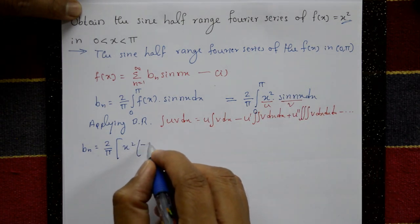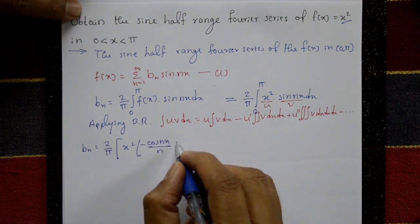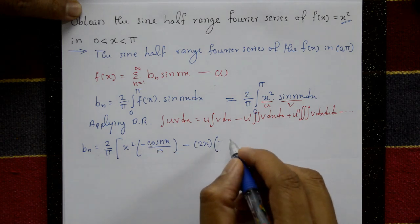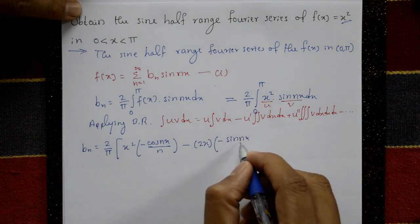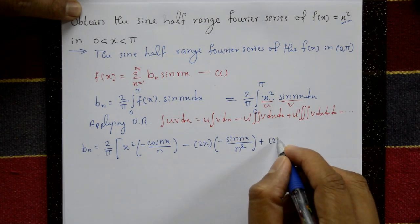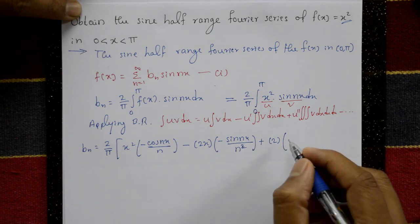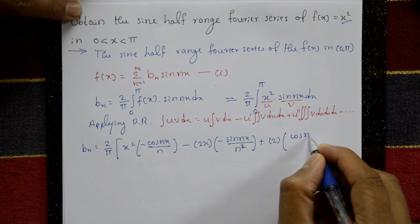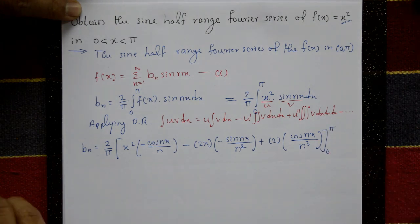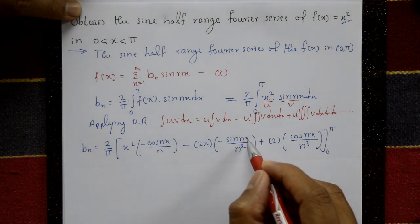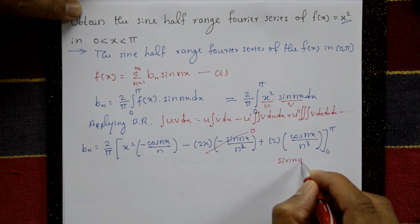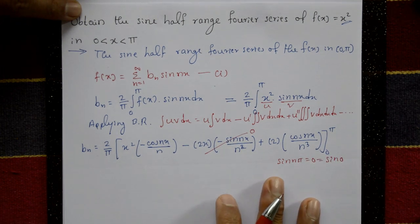Applying Bernoulli's rule: (2/π) [ x² · (−cos(nx)/n) − (2x) · (sin(nx)/n²) + 2 · (−cos(nx)/n³) ] with limits 0 to π. Putting x = π: sin(nπ) = 0, and putting x = 0: sin(0) = 0, so the second term vanishes entirely.